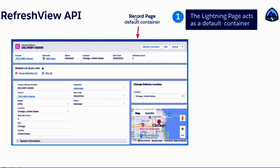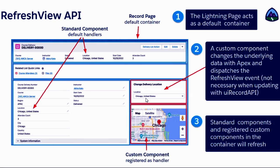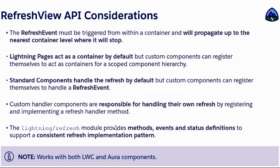We have a record page. A record page gives you an implicit record ID — your Lightning record page. This is a record page because it contains other components: a custom component that is changing my location, and another custom component that is registered as a handler. A handler means this component will be handling the refresh event and it's going to refresh the location. There is also another component which is a standard component where you see the location, so that should also get updated. So there are two handlers here — one is your custom, another one is your standard.